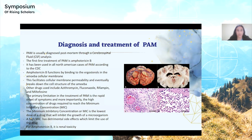The first line of treatment is amphotericin B, which, according to the CDC, has been used in all North American cases of PAM, along with other antifungal medications such as azithromycin, rifampin, fluconazole, and miltefosine. The reason that any of these antifungals are insufficient — as represented by the high mortality rate — is because they require a high minimum inhibitory concentration.